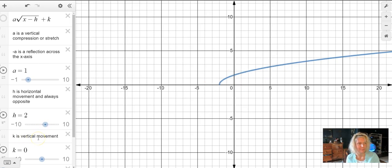K is your vertical movement, and we keep that sign. So if I move this slider towards positive 10, notice that graph is climbing up the y-axis, and if K is negative, it falls below the x-axis.